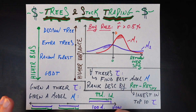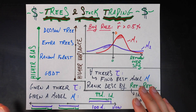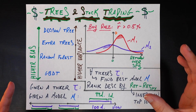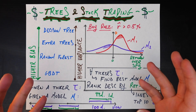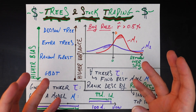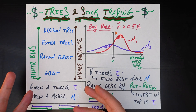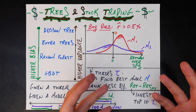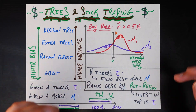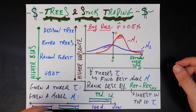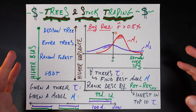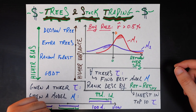Before we get into the different models and the methodology, let's answer two fundamental questions: why would we expect trees to work well for stock trading, and why would we not expect trees to work well? Interestingly, the answer to both is based in the nature of how tree-based models work — we are splitting, creating decisions that ask: is this feature less than a value or greater than that value?